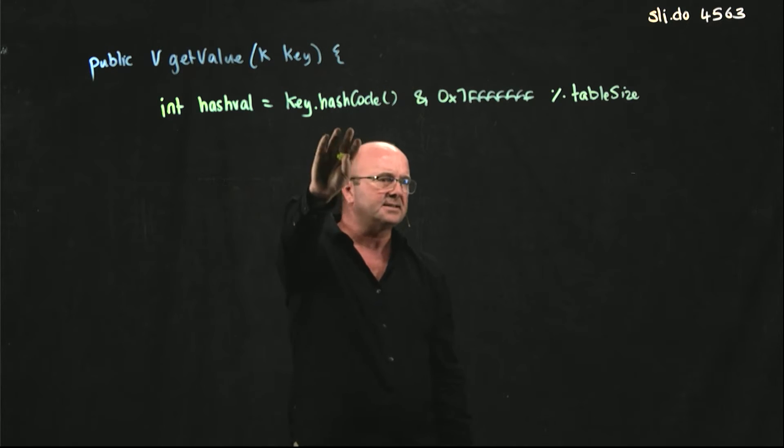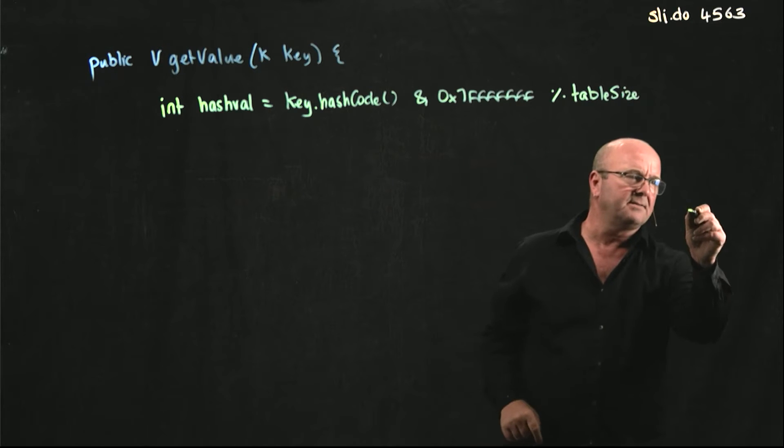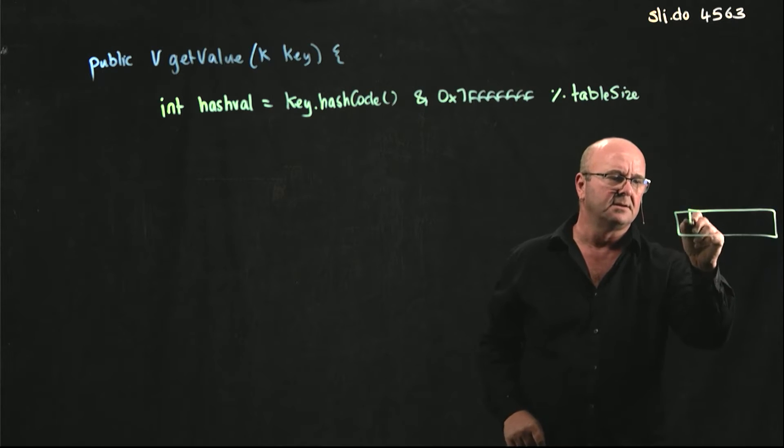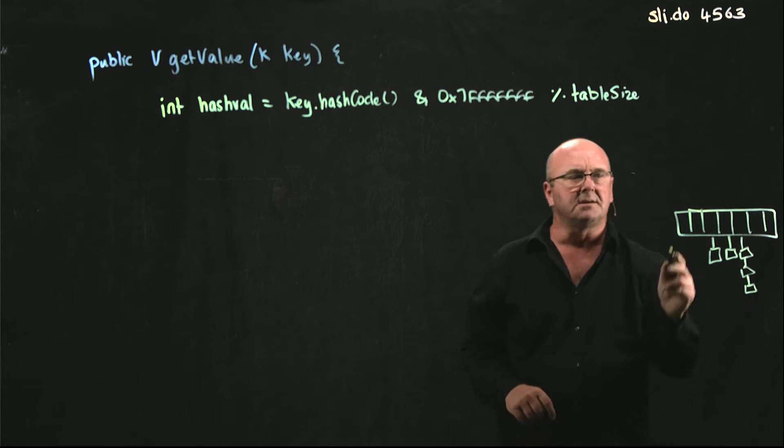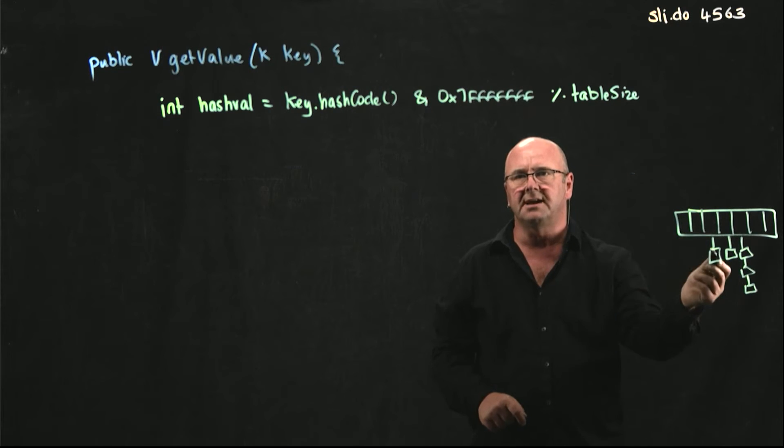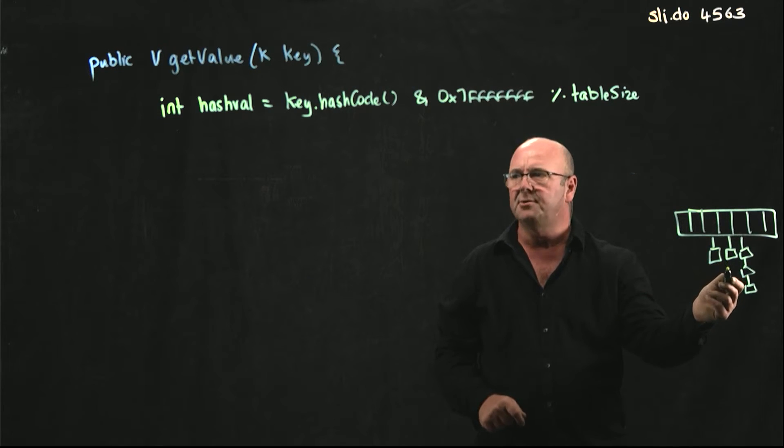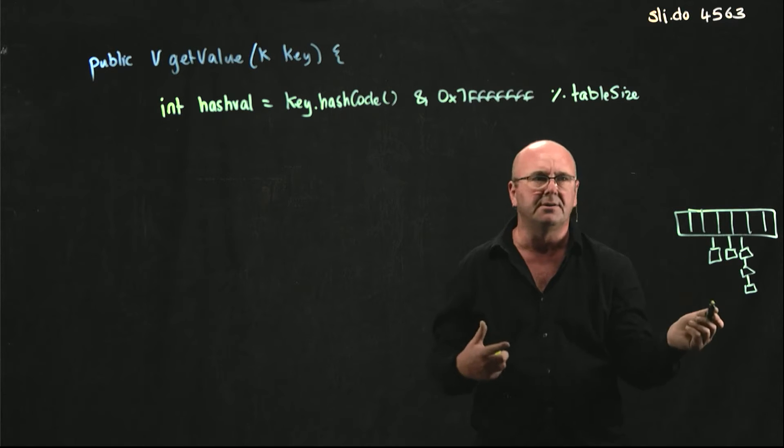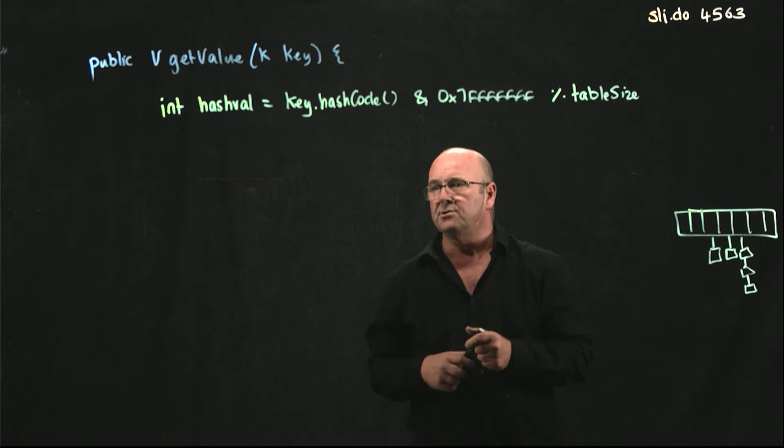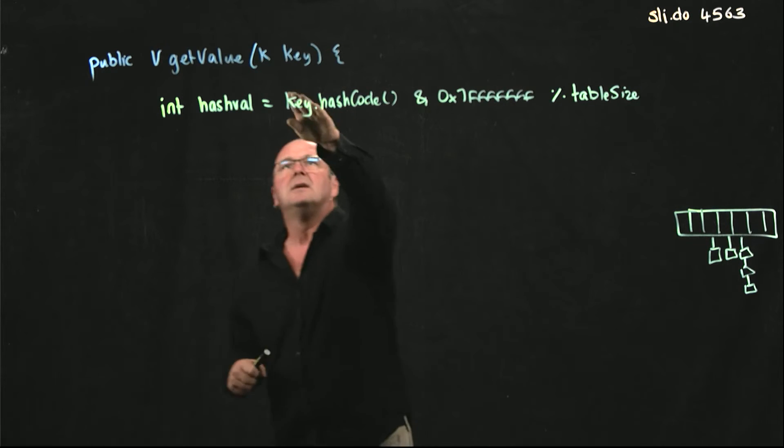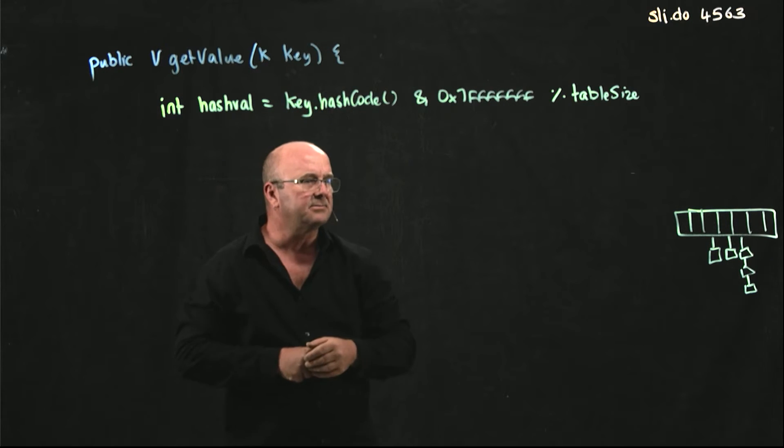So this gives us an index in our array of linked lists. We've got an array of linked lists. Some may be empty, some may have one element, and some may have more than one element. We don't know how many elements are in there, and we don't really care. All we care about is finding the element where the key is the one we're looking for.